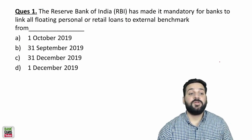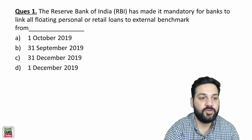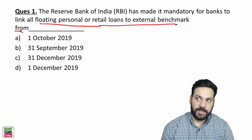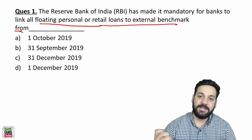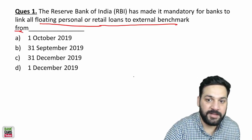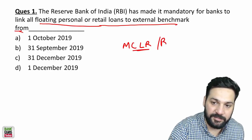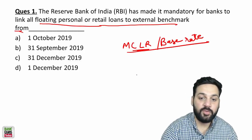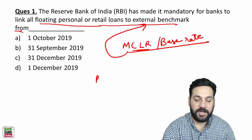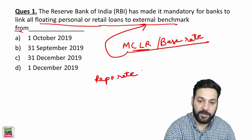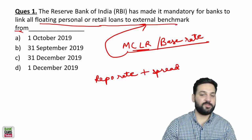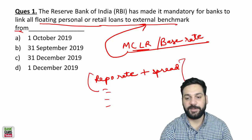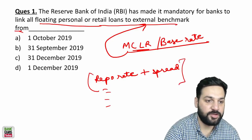Let's start with the very first question. RBI made it mandatory for banks to link all floating retail loans to external benchmarks from which date? RBI has made it mandatory for all banks to switch from the MCLR or base rate system of calculating interest to an external benchmark — for example, the repo rate of RBI plus whatever spread you want to charge from your customers.